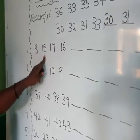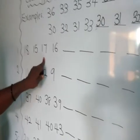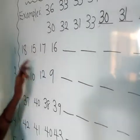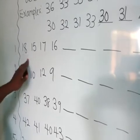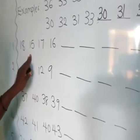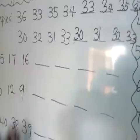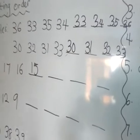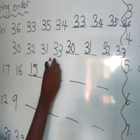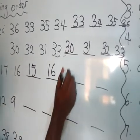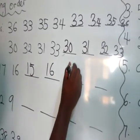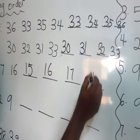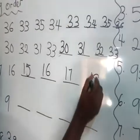15. 1 and 5 is 15. 1 and 6 is 16. 1 and 7 is 17. And 1 and 8 is 18.